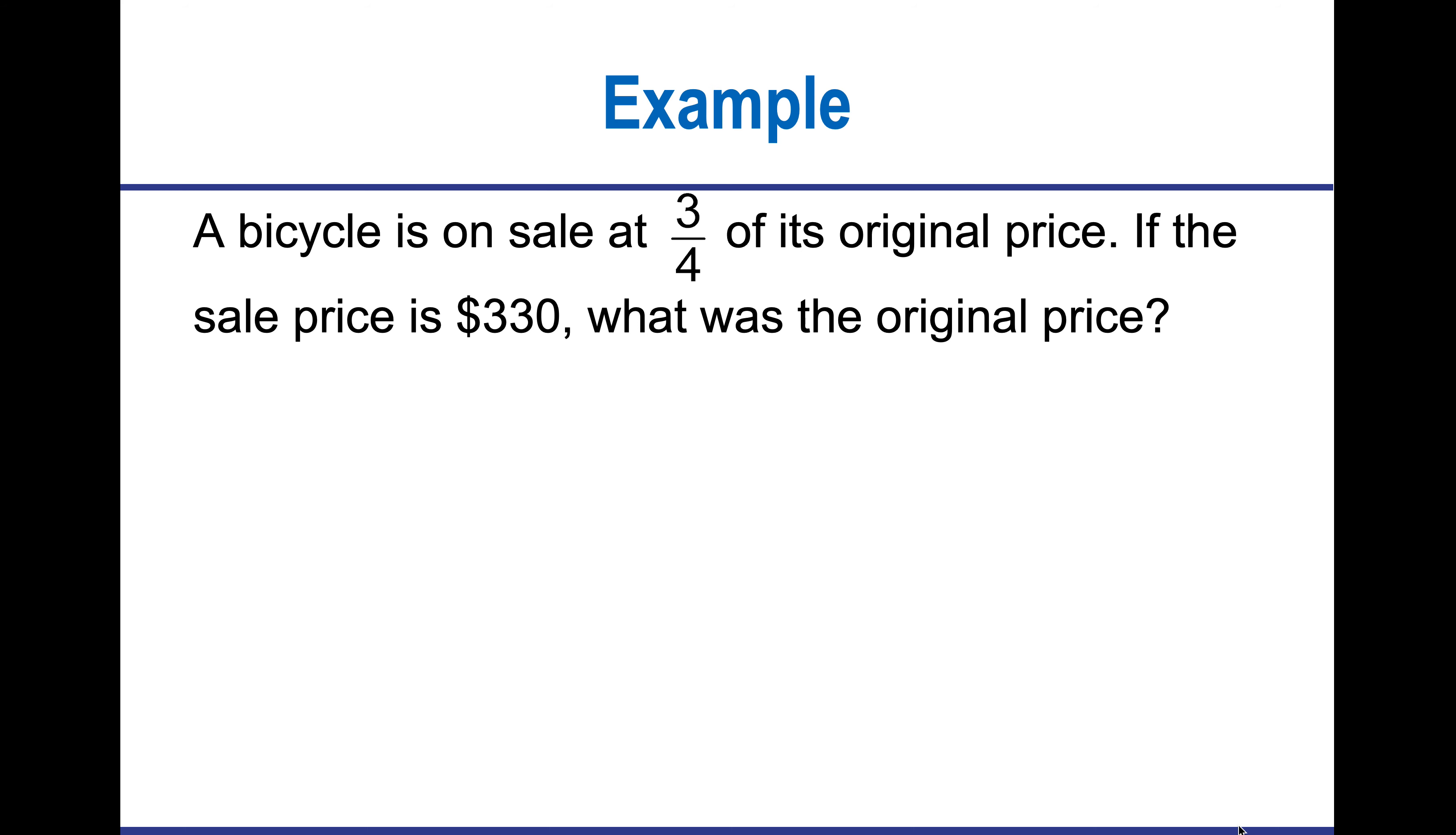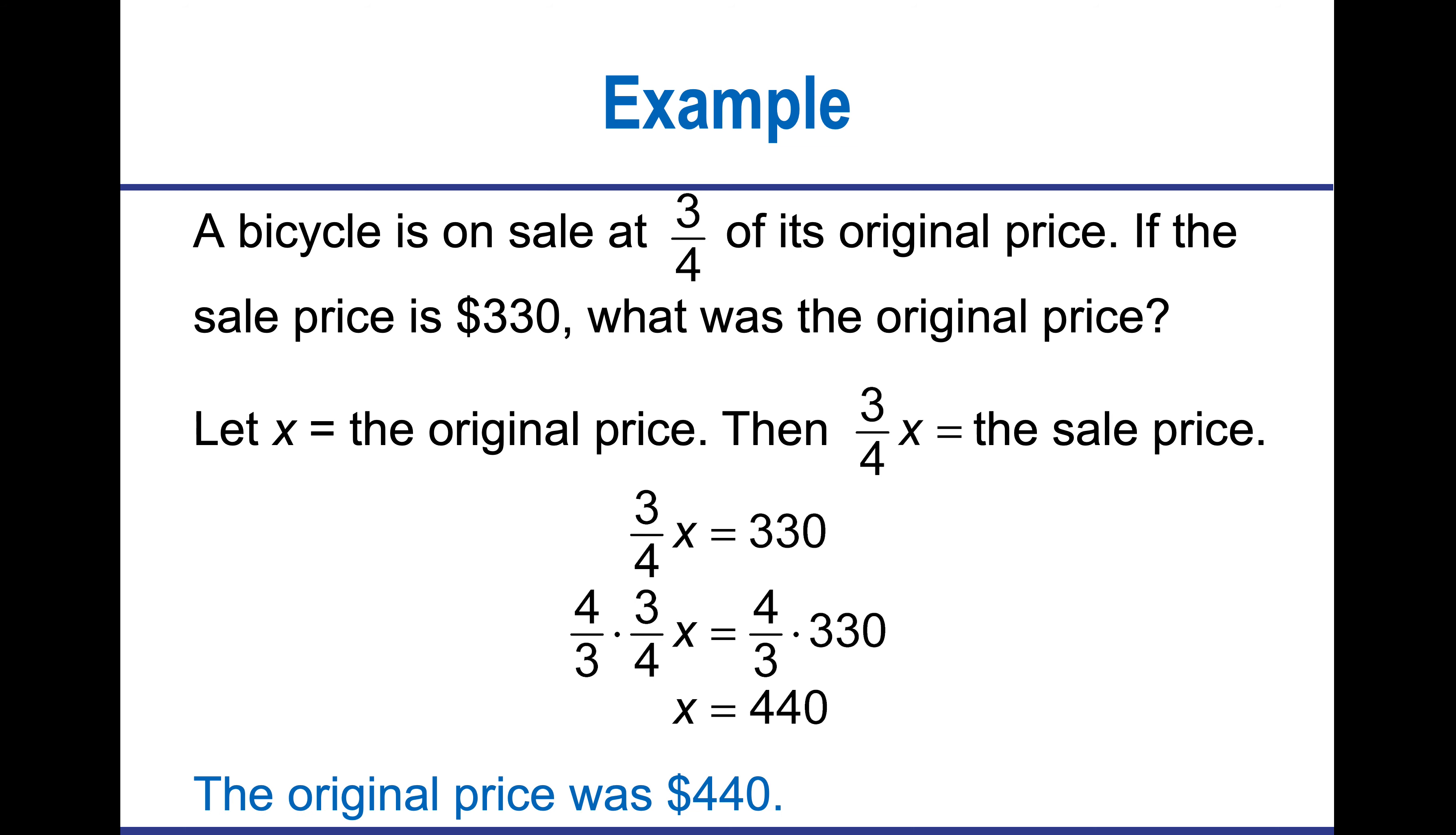Here's another example that we're going to utilize with a simple word problem. We're going to let x be the original price, and 3 fourths of x be the sale price. So I'm going to compute 3 fourths of x equals 330. To get x alone, I'm going to multiply by the reciprocal. So I multiply both sides by the reciprocal, and I find that x is 440. So that gives me what the original price was.